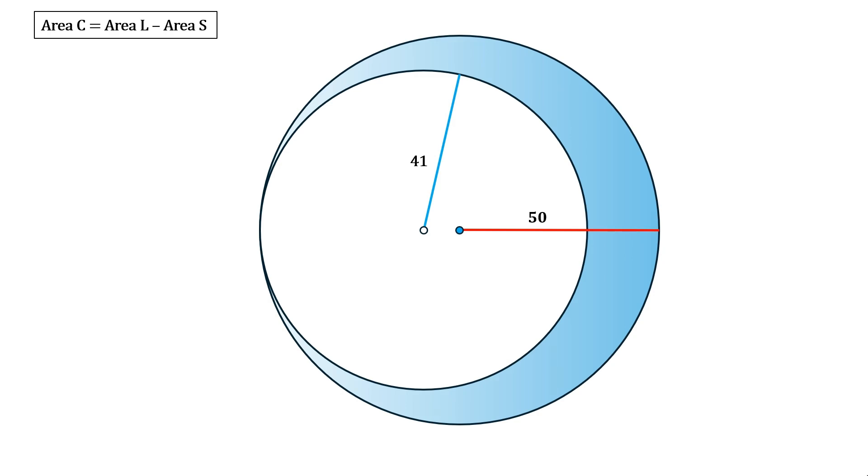Let's now find the areas of the two circles. Recall the formula pi r squared. For the smaller circle, the area is pi times 41 squared which gives us 1681 pi. For the larger circle, the area is pi times 50 squared which gives us 2500 pi.